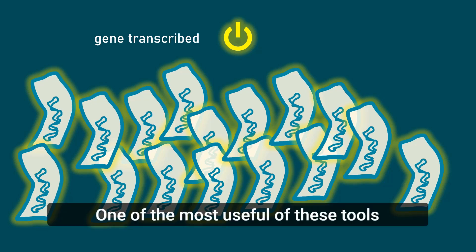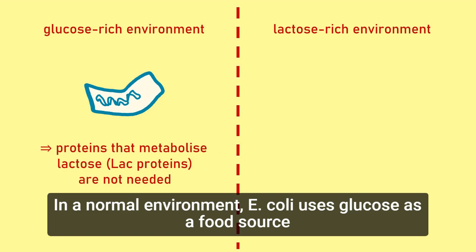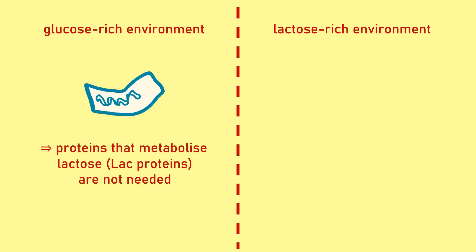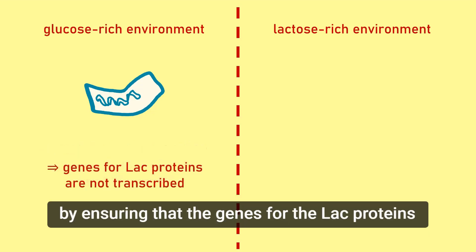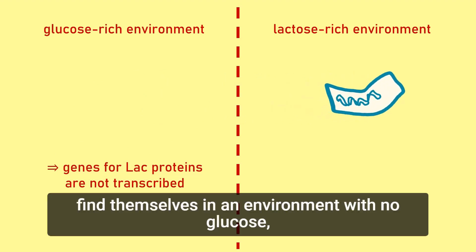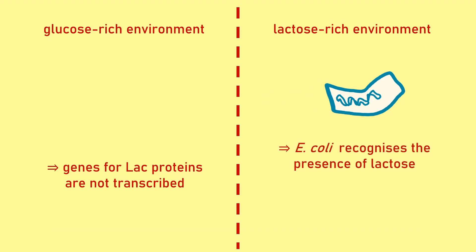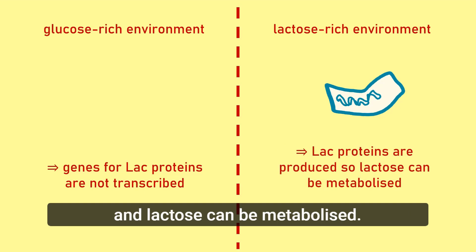One of the most useful of these tools is the lac operon, a set of E. coli genes expressed only in the presence of lactose. In a normal environment, E. coli uses glucose as a food source and therefore the proteins that metabolise lactose are not needed. Rather than wasting energy by making these proteins, the bacteria save energy by ensuring that the genes for the lac proteins are not transcribed. However, when the bacteria find themselves in an environment with no glucose, they recognise the presence of lactose and switch on their lac genes. Consequently, the lac proteins are produced and lactose can be metabolised.